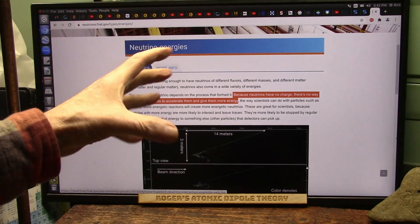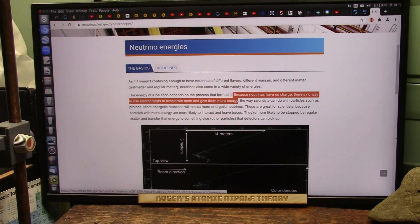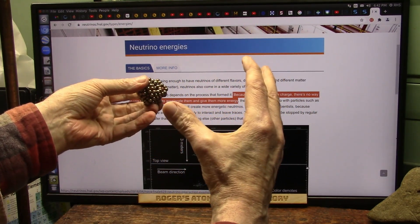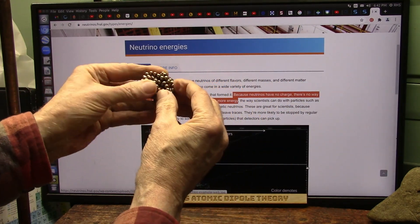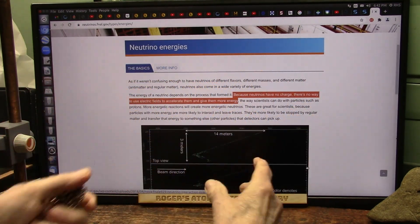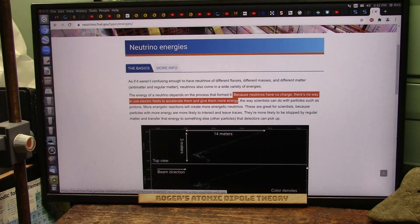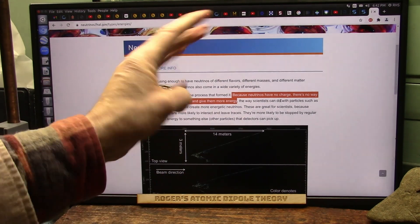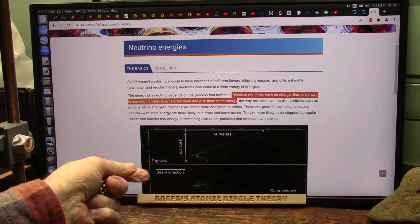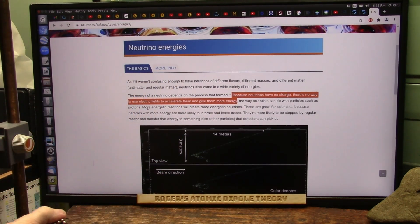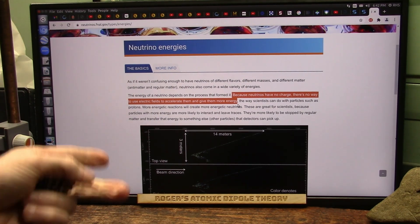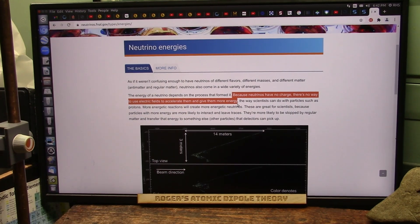The closer to the nucleus, the more energy it will have. The further from the nucleus, if they're way out here, they're just red because they're just barely held on. If they're way down here, they're tight and then you get the blue. They say because neutrinos have no charge, there's no way to use electric fields to accelerate them. I can do it with the Venturi. I just showed you.